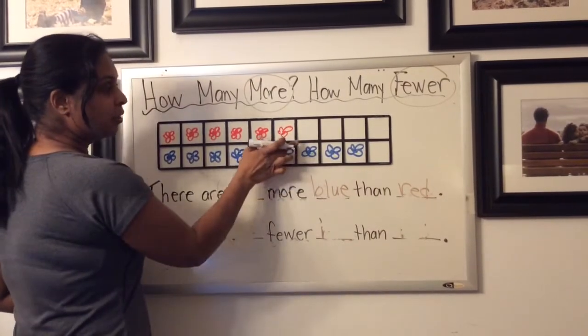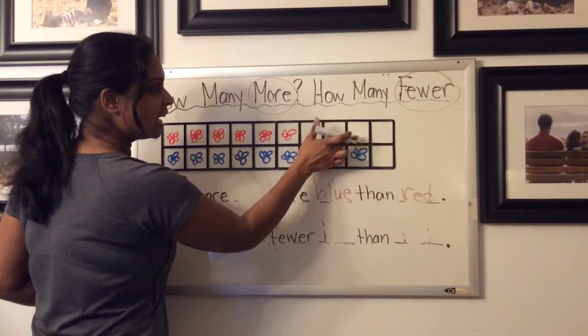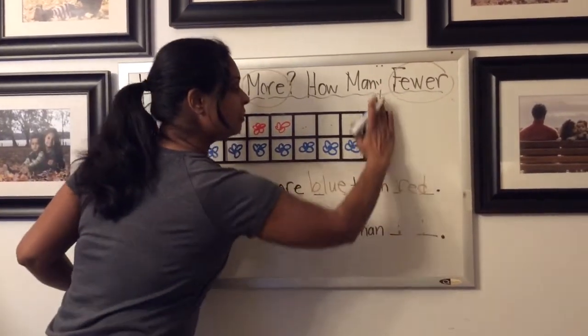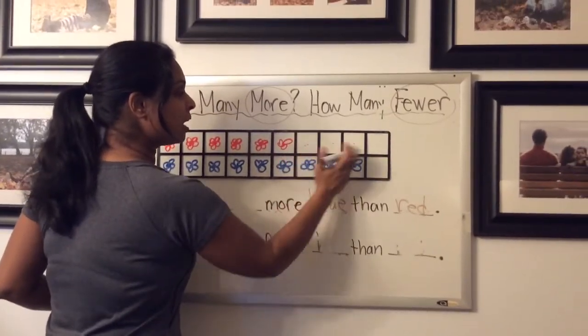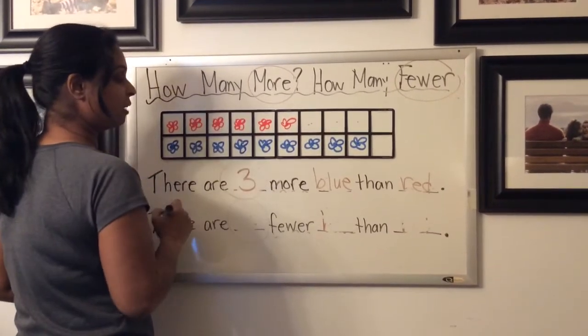How many more blue? Well, I'm going to look at my pictograph and I'm going to notice that there's three more. And again, I'm not looking at the extra boxes, just looking to see where the farthest one ends. So I can see these three empty spaces above the blue. That means there are three more blue than red.